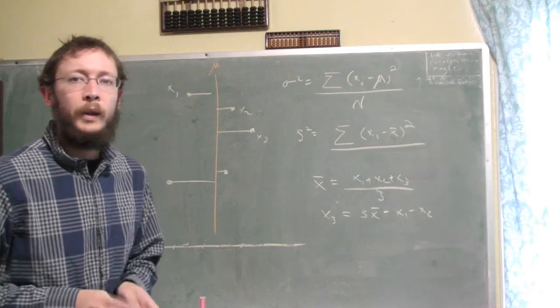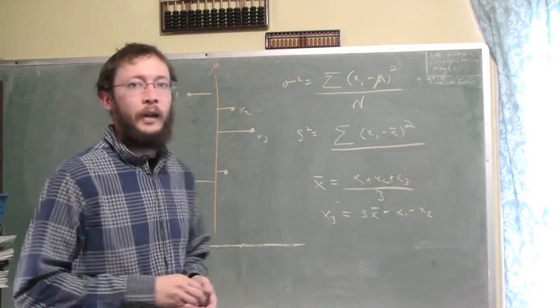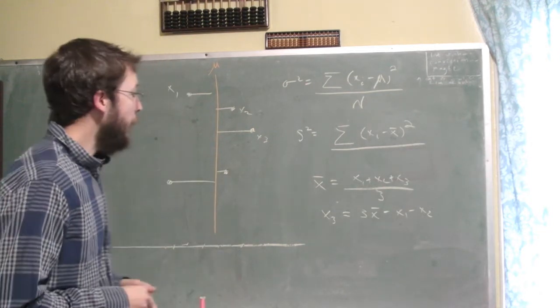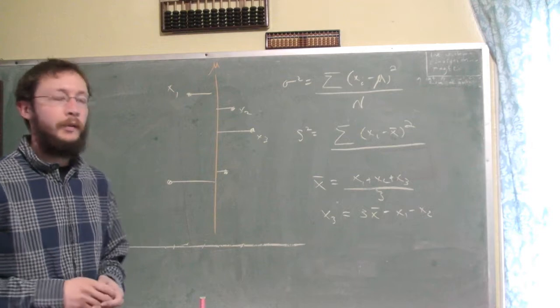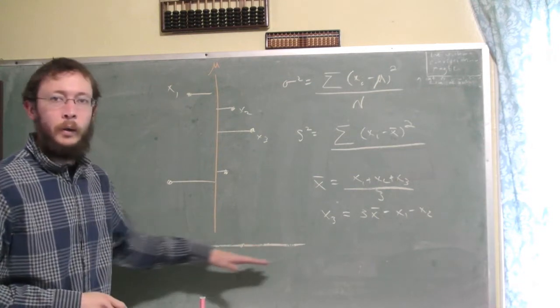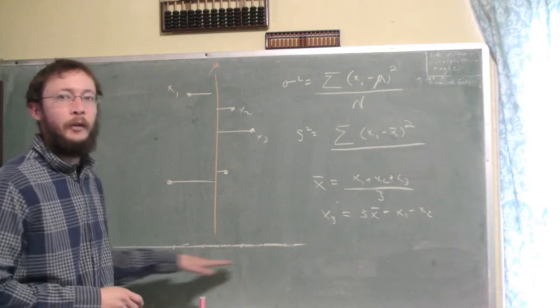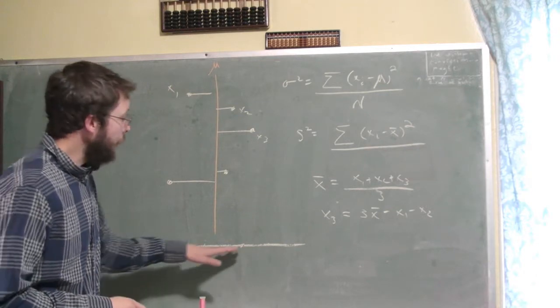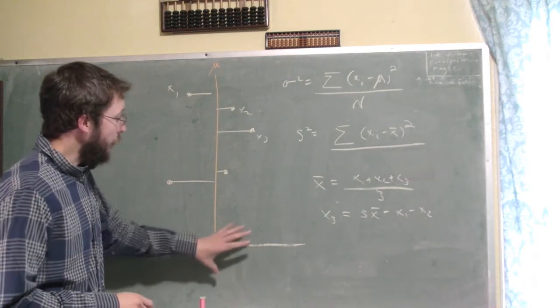So we're going to explain degrees of freedom using variance as an example. And the way I like to think about random variables is that you've got the real number line, and so a random variable is going to be bouncing around on this number line.